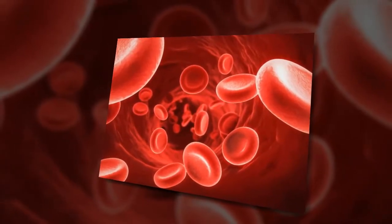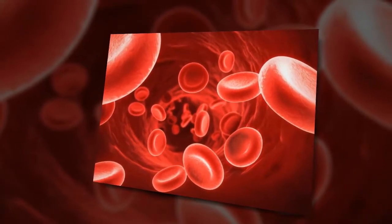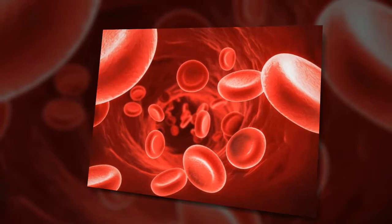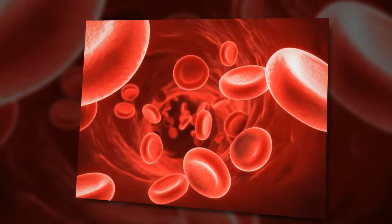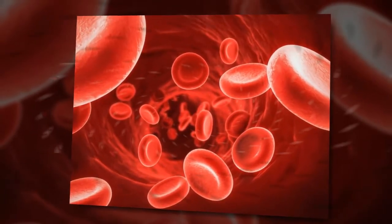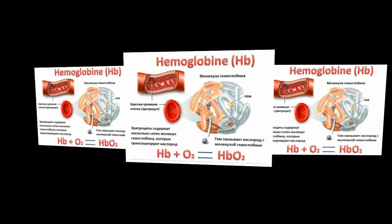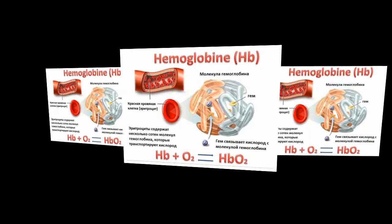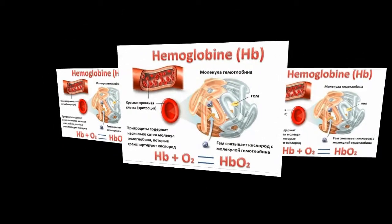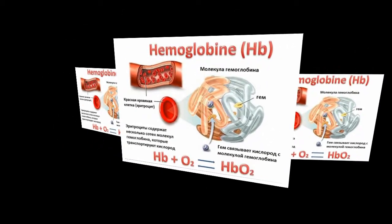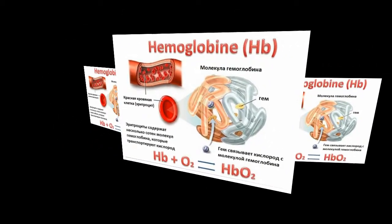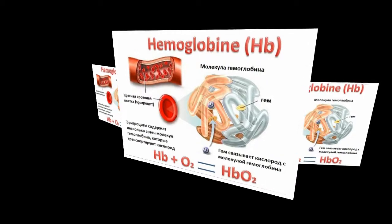Embedded within the heme compound is an iron atom that is vital in transporting oxygen and carbon dioxide in our blood. The iron contained in hemoglobin is also responsible for the red color of blood.